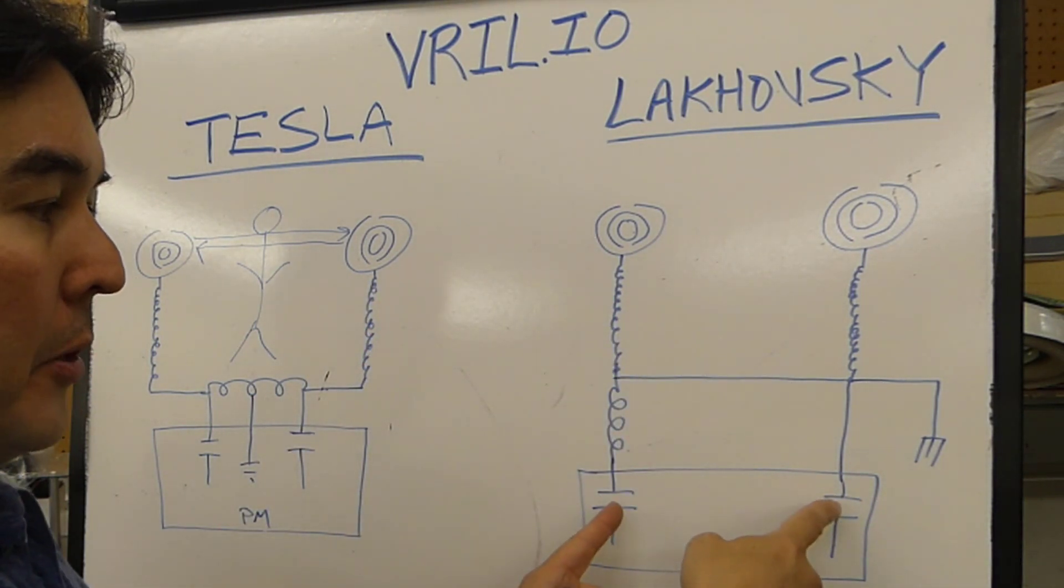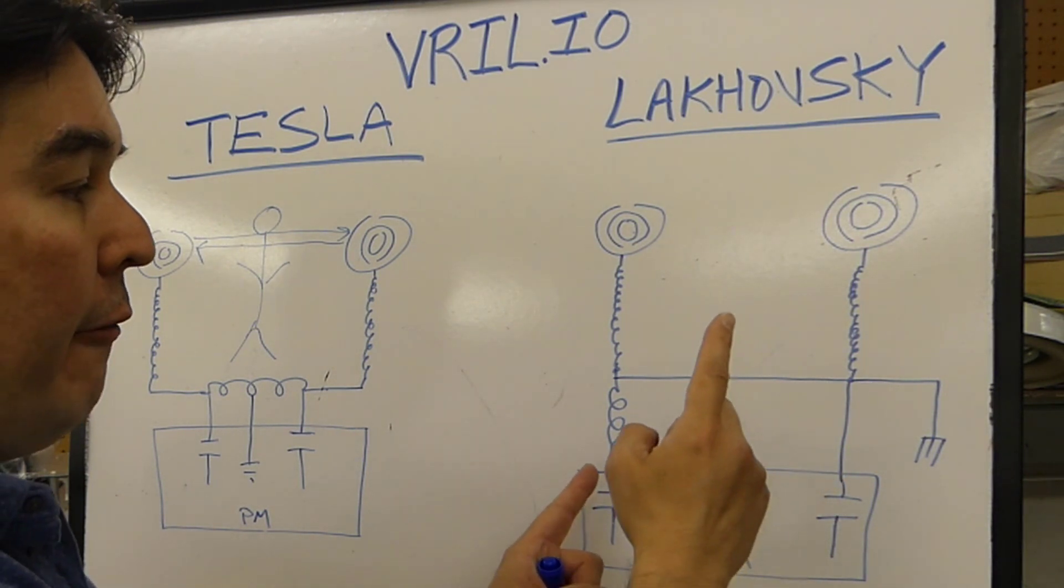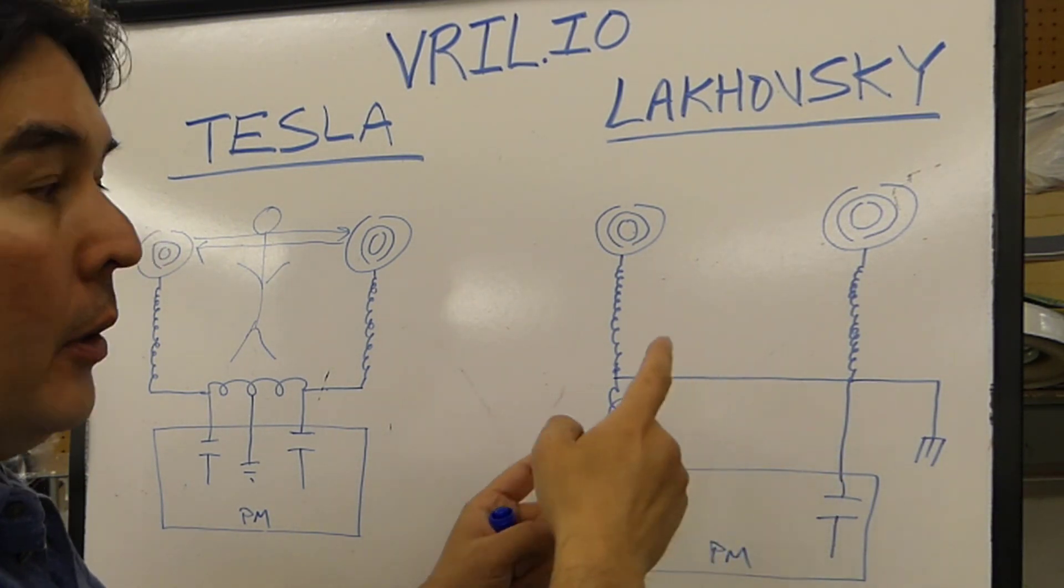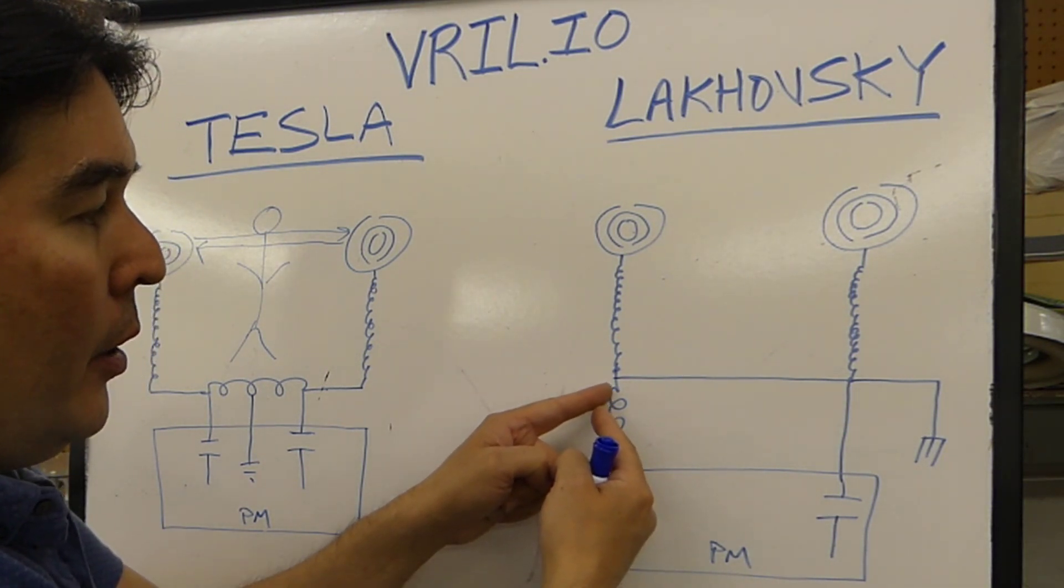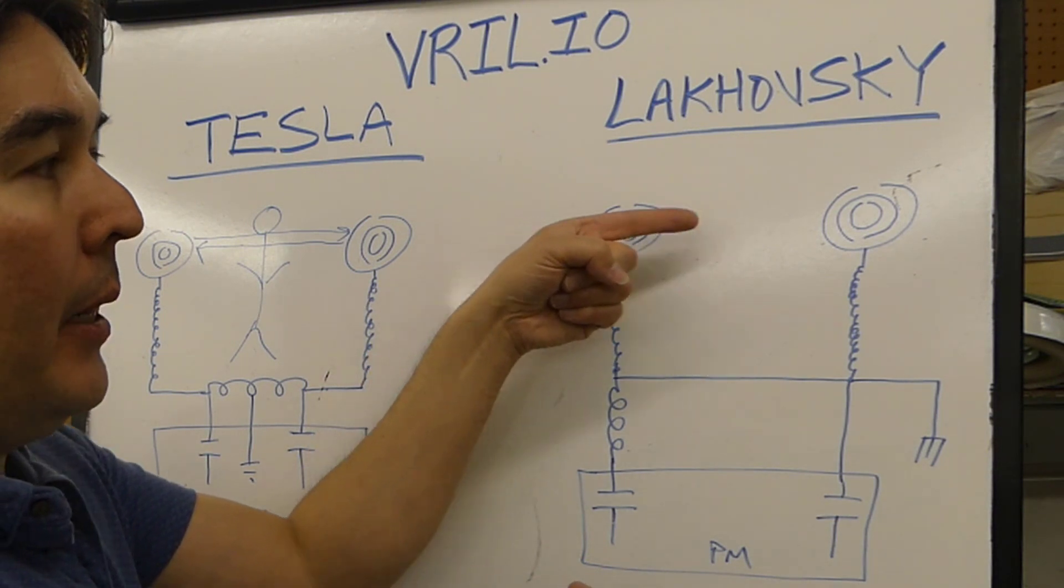The same thing happens here, is that these capacitors alternately fire back and forth. What happens is, when this one fires, it's going through the primary, through the secondary, and this antenna is emitting it.